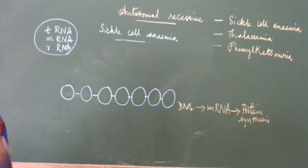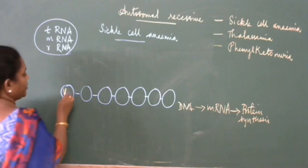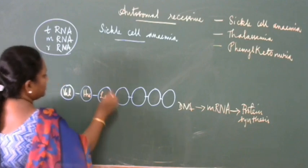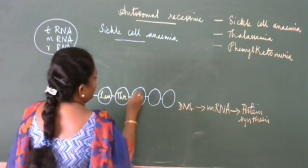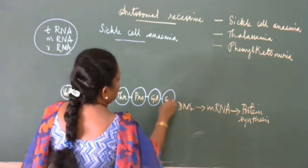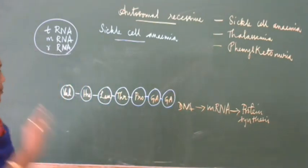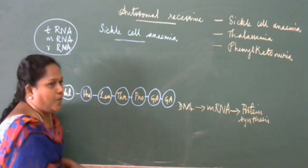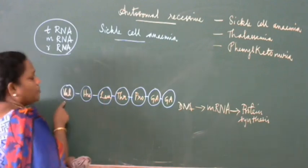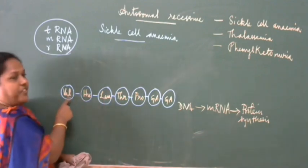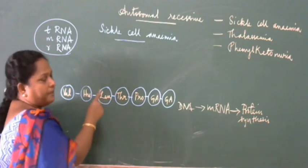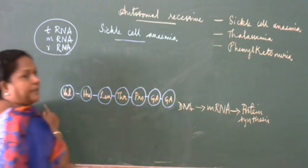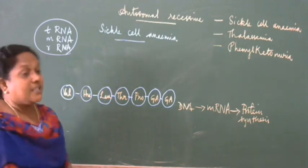The amino acids that are linked in the hemoglobin beta-globin chain include: valine, histidine, leucine, phenylalanine, proline, glutamic acid, and glutamic acid — joined together in the form of a protein called hemoglobin. This group of amino acids is responsible for the production of normal hemoglobin.